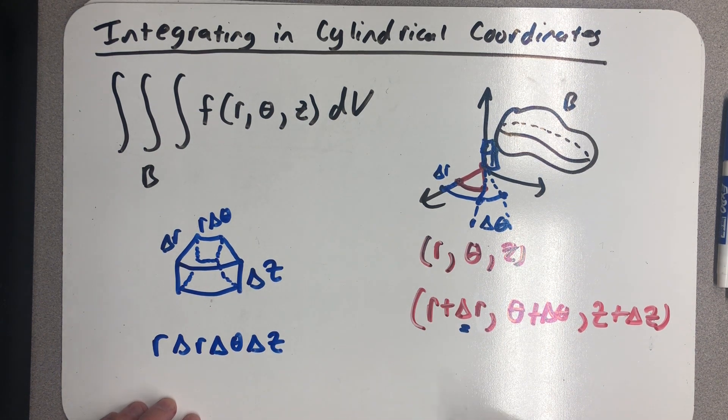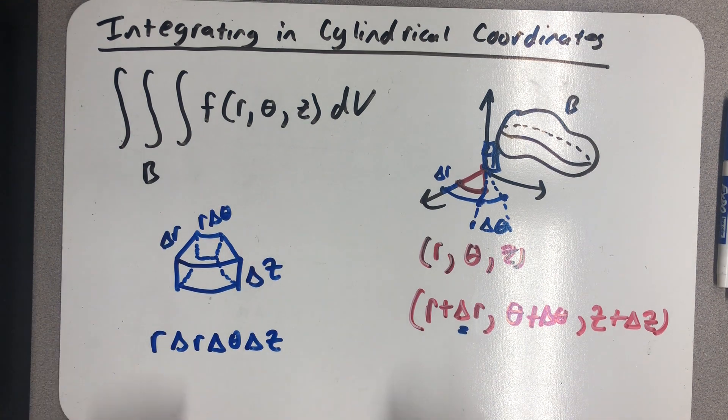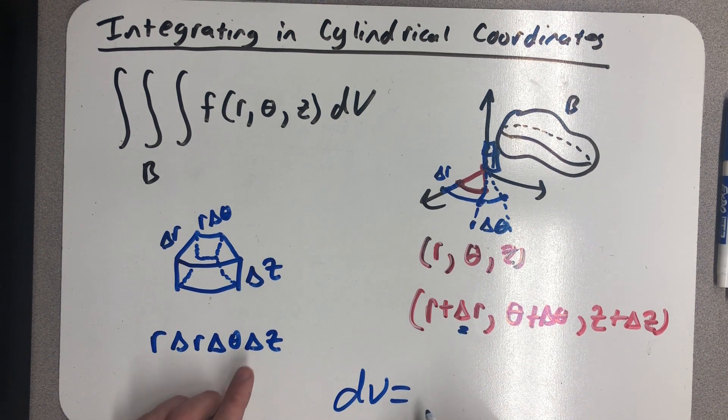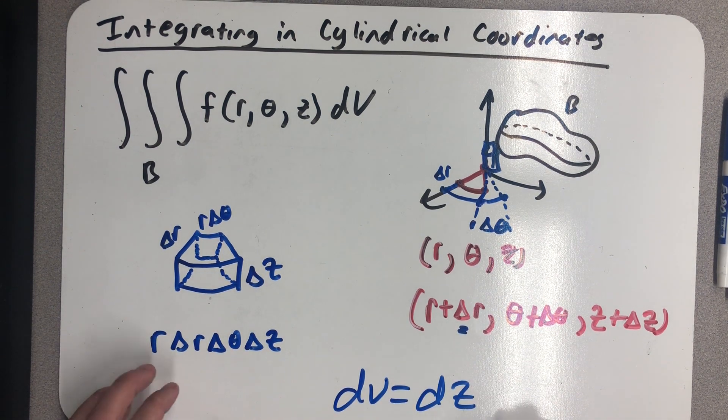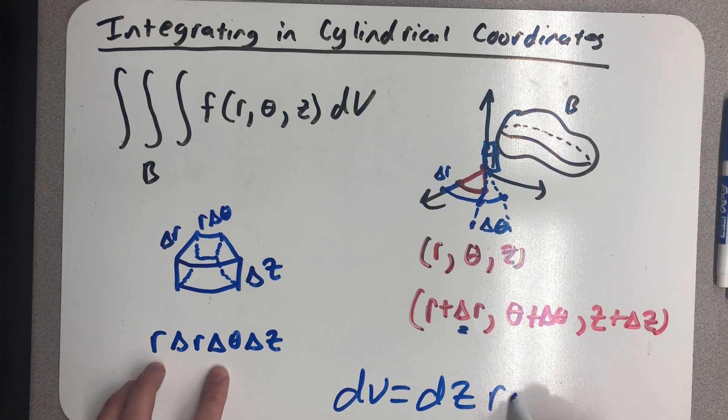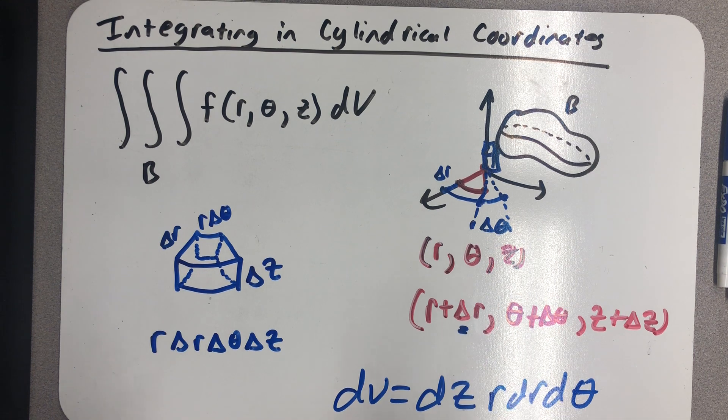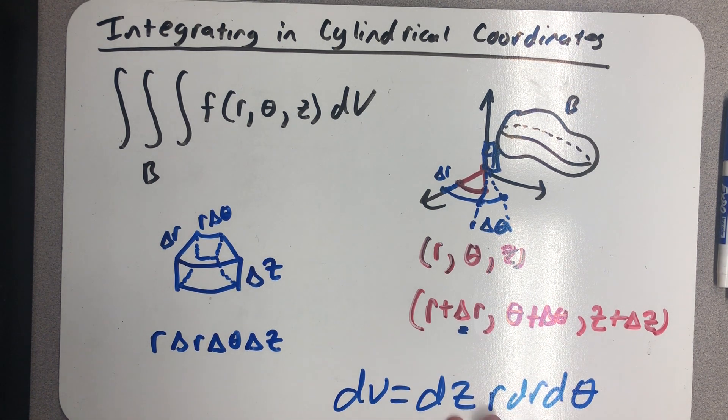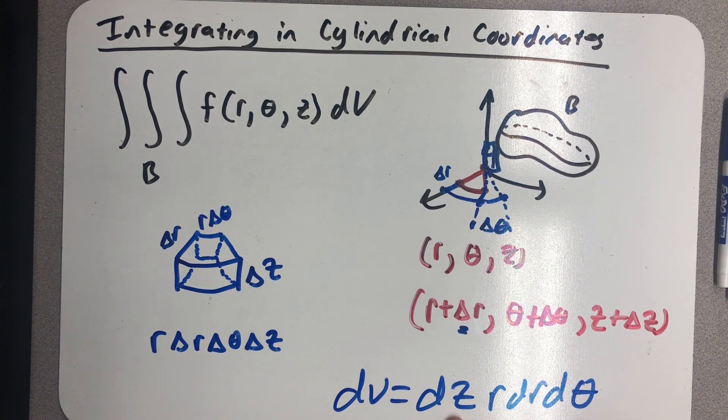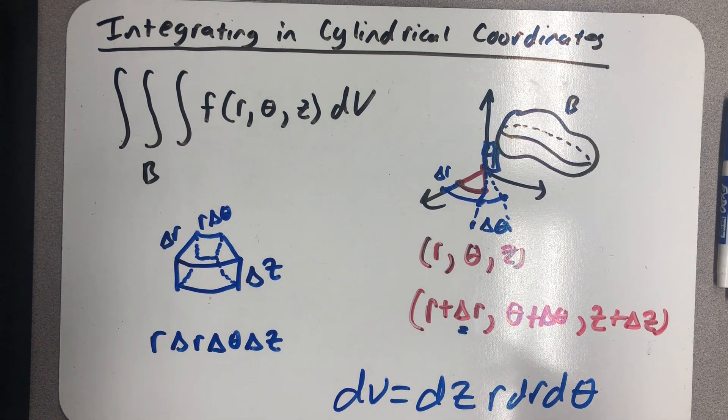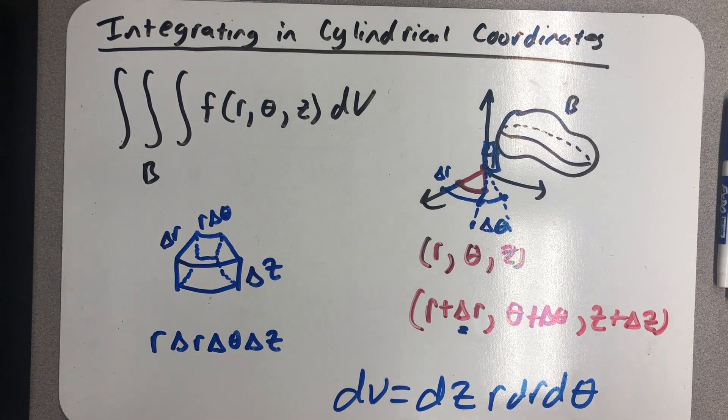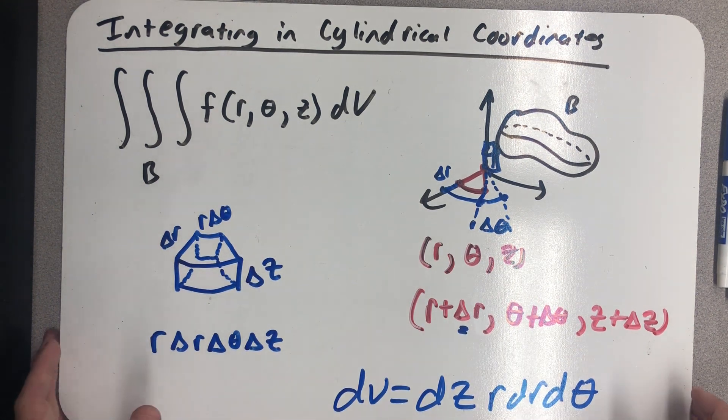And so what I realize is that if I did this in a Riemann sum and took a limit as n approaches infinity, dV would become dz·r·dr·dθ. And that's the nicest part, because what I realize now is this is dA from polar coordinates times dz. If I take a little dA, an area, and multiply it by height, I get a volume.